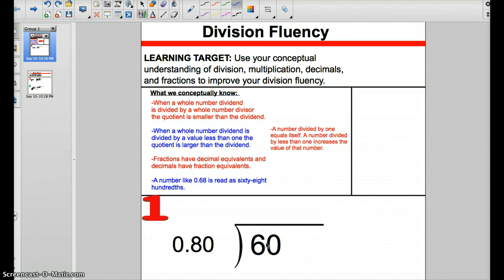60. If you divide this by 1, you'll get 60. If I have 60 pencils and I need to split them across one person, that one person is going to get all 60 pencils. But conceptually, we know that if you take 60 and divide it by a value that's less than 1, the quotient is going to increase and be larger than the dividend. So if your divisor is less than 1, your quotient is going to be greater than the dividend.